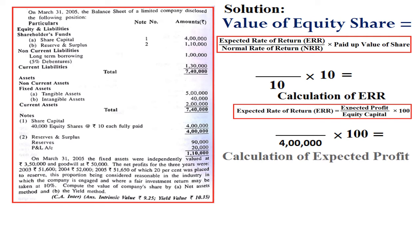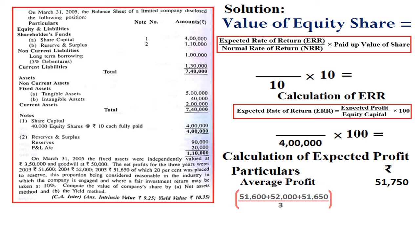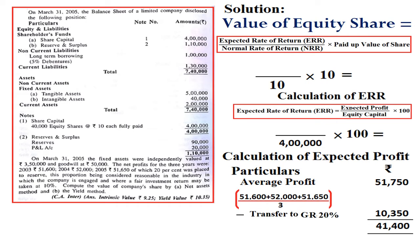The information given shows profits for three years. Average profit = (56,100 + 52,000 + 51,650) / 3 = 51,750. From this, we deduct the amount transferred to general reserve — 20% as given in the question. General reserve transferred = 51,750 × 20% = 10,350. Expected profit = 51,750 − 10,350 = 41,400. Applying this in the ERR formula: 41,400 divided by 4,00,000 into 100 = 10.35%. That is our ERR.